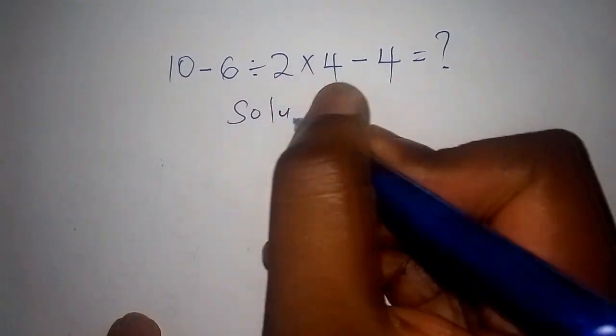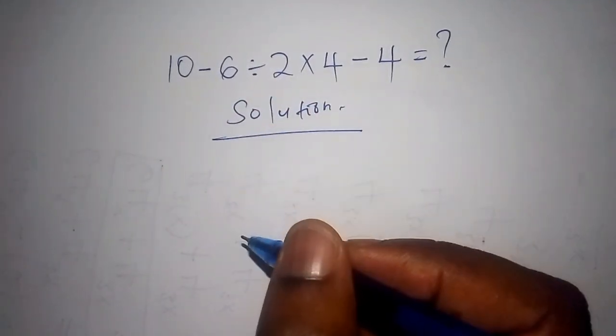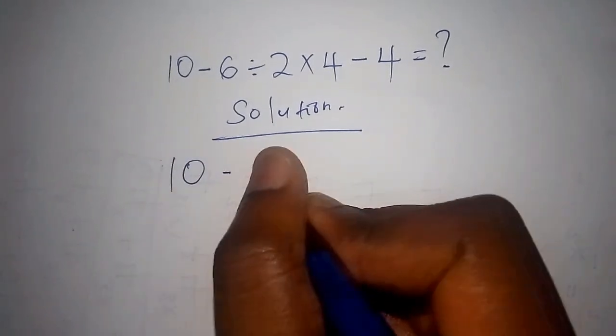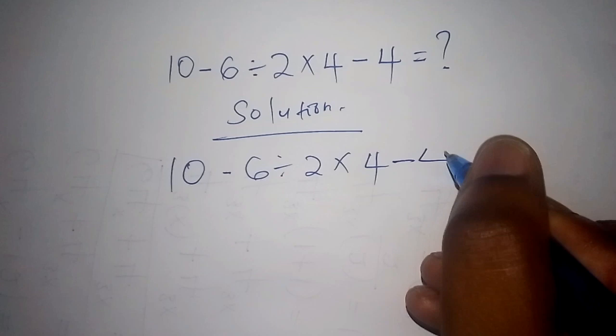So on this, let's work out the solution where now we want to work it out within the shortest time possible. We have 10 minus 6 divided by 2 multiplied by 4 minus 4.